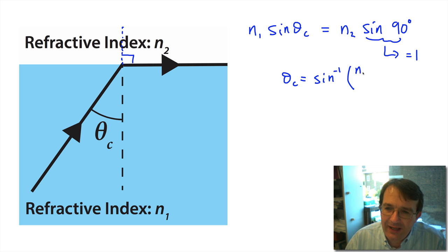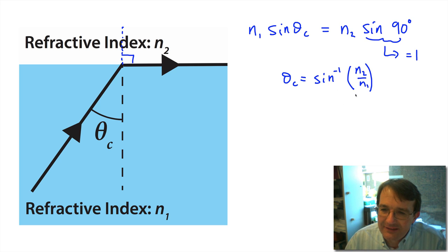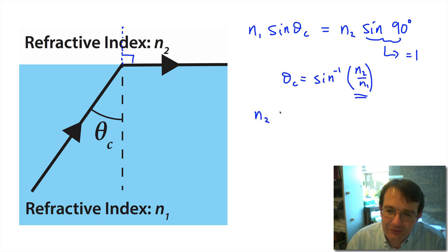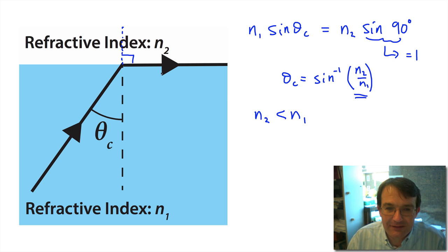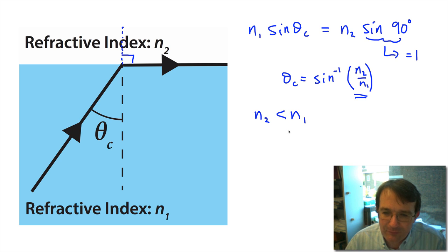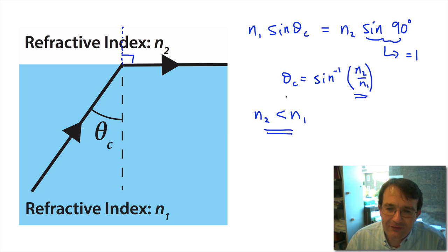...this equation simplifies to: the critical angle equals the inverse sine of n2 divided by n1. Since this is an inverse sine, the value n2 over n1 must be less than one, which requires that n2 is less than n1. If n2 equals n1 there is no boundary — the light passes unhindered. So to get total internal reflection, you must be attempting to enter a medium with a lower refractive index, and your angle of incidence must be greater than this critical angle.